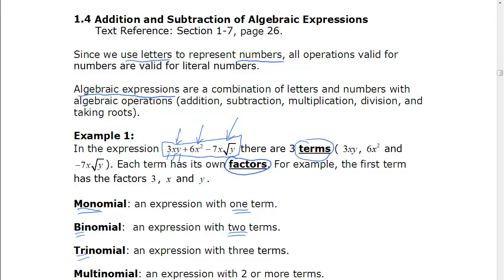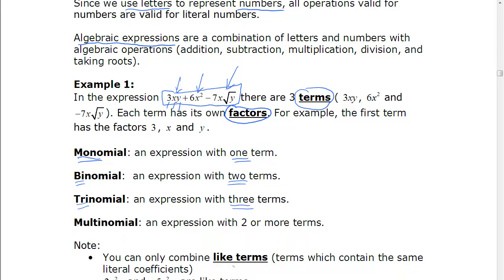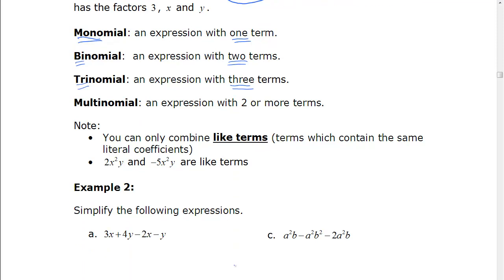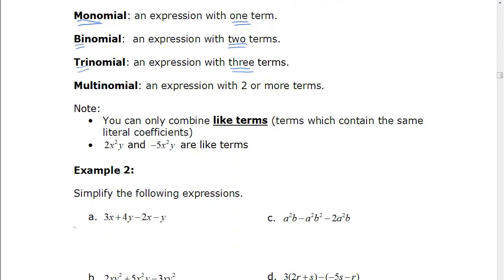Trinomial, I'm sure you can guess, tri means three, so that's an expression with three terms. And if we move our page here, we get multinomial. Multinomial is an expression with two or more, so that's just any polynomial or multinomial.